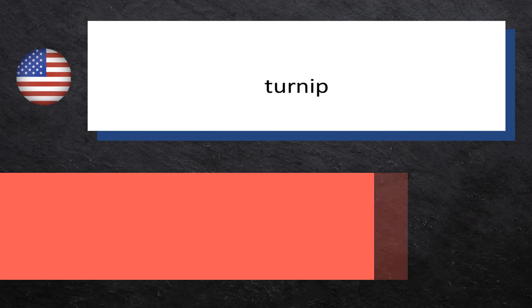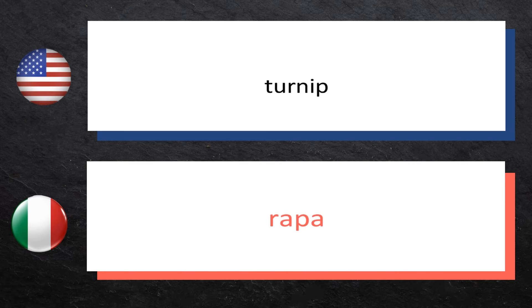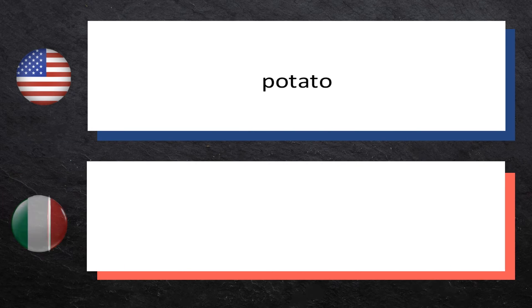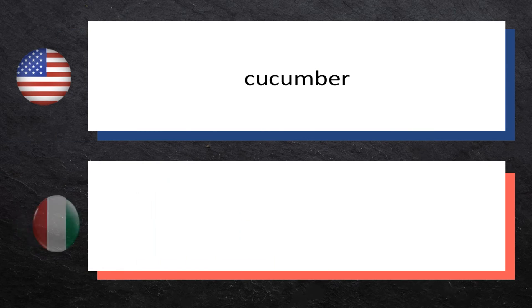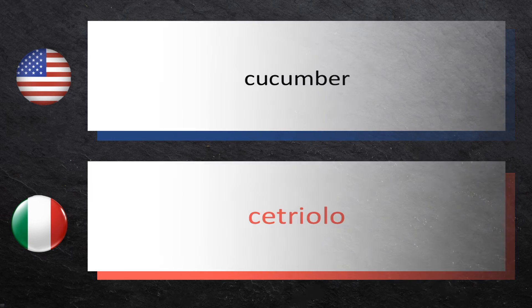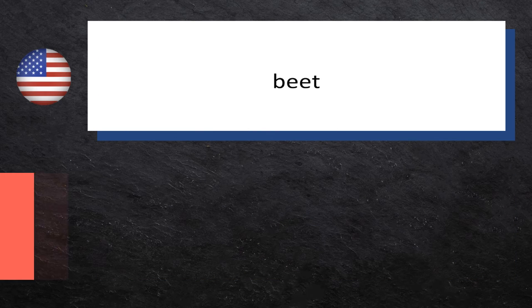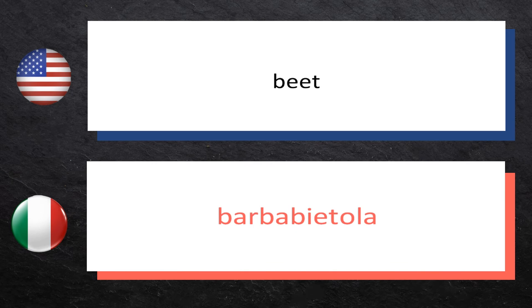Turnip — Rapa. Rapa. Potato — Patata. Patata. Cucumber — Cetriolo. Cetriolo.